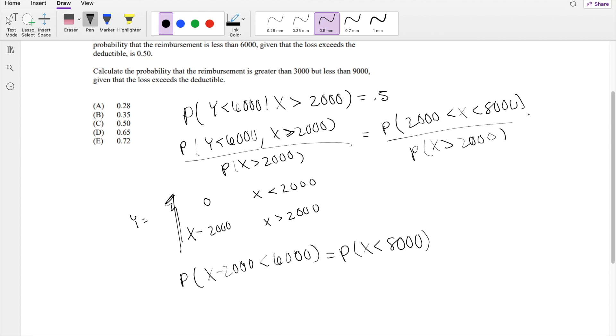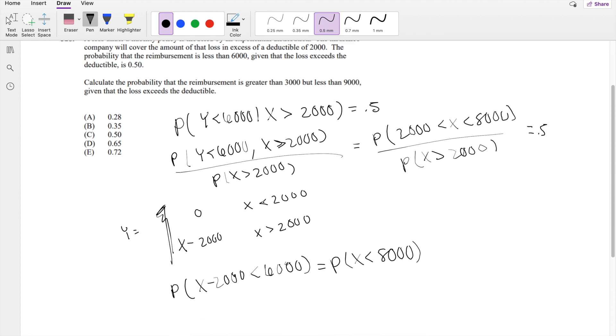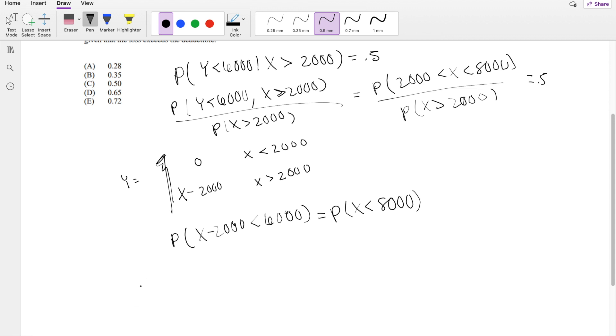And the thing is, we want to put everything in terms of X because we know that X is an exponential distribution with the mean of, we don't know what that is, but we know that it is. So for exponential function CDF, it's equal to 1 minus e to the negative X over lambda.